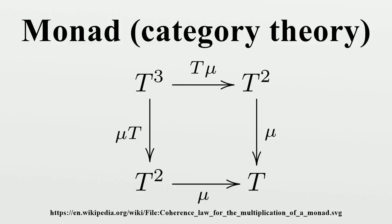Then this category has an initial object where C_T is the Kleisli category, and a terminal object